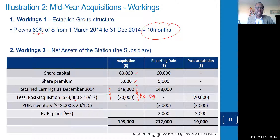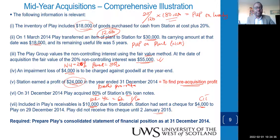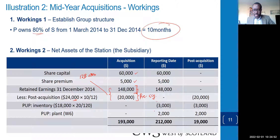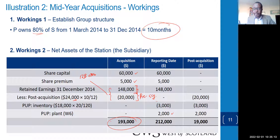Pre-acquisition retained earnings of 128,000 combined with share capital gives the net identifiable assets used in the goodwill calculation. Then adjust for PUPs: the inventory PUP of 3,000 reduces the subsidiary's post-acquisition results. The plant PUP is added back. These adjustments affect both the net assets figure for goodwill and the post-acquisition split between parent and NCI.